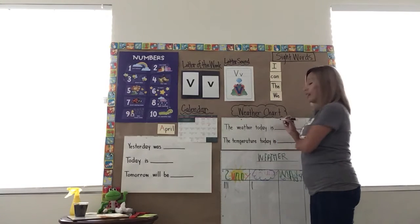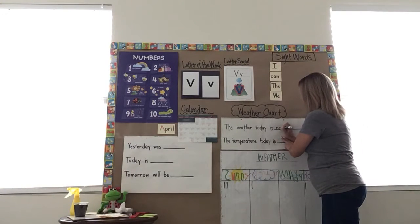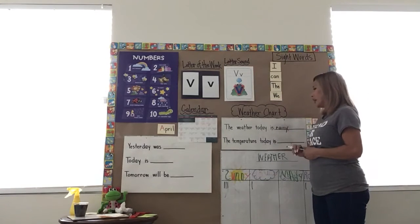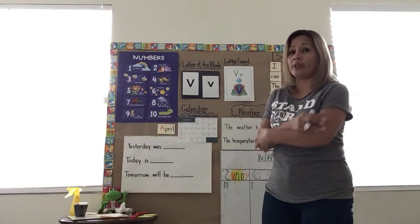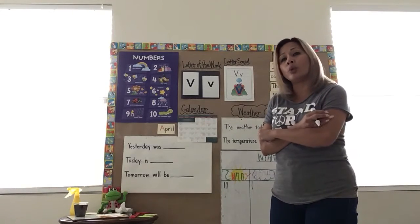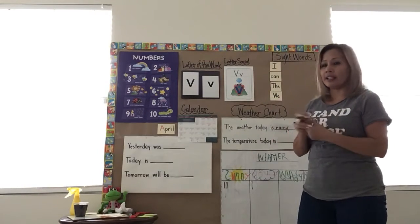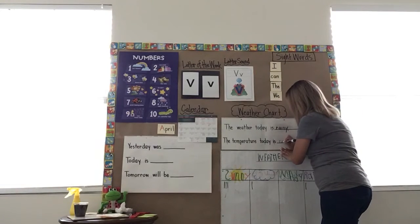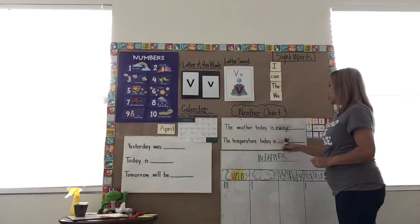Remember, the first letter is an R. Raining — R-A-I-N-Y. The weather today is raining. And the temperature today, since it's raining, it is cold outside. It's even cold inside the house. So today the temperature is cold. C-O-L-D. The temperature today is cold.